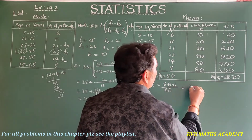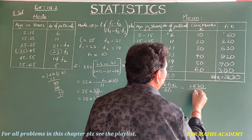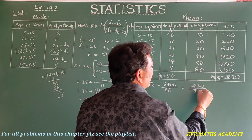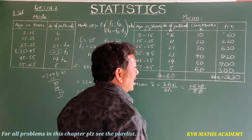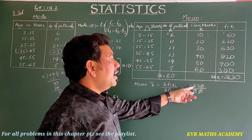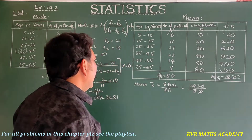Substituting into the formula: x̄ = 2830 / 80. Cancelling the zeros gives 283 / 8.